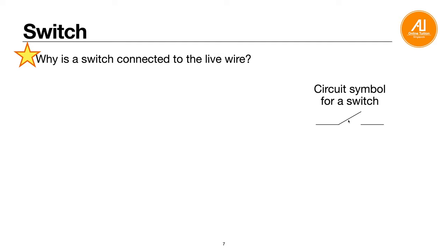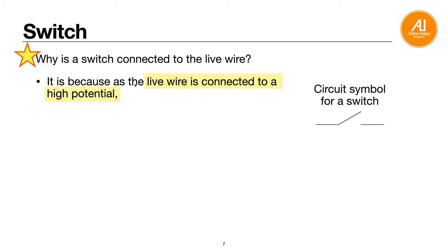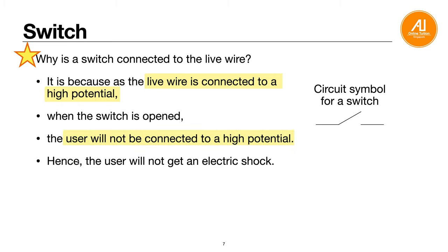Next, the switch. You must remember the official symbol for a switch. Why is the switch connected to the live wire? This is a very common exam question. The answer is: the live wire is connected to a high potential - 240 volts. When the switch is open, current is no longer flowing because the circuit is open, so the user will not be connected to a high potential and hence will not get an electric shock. Make sure you mention the highlighted key points in your answer.